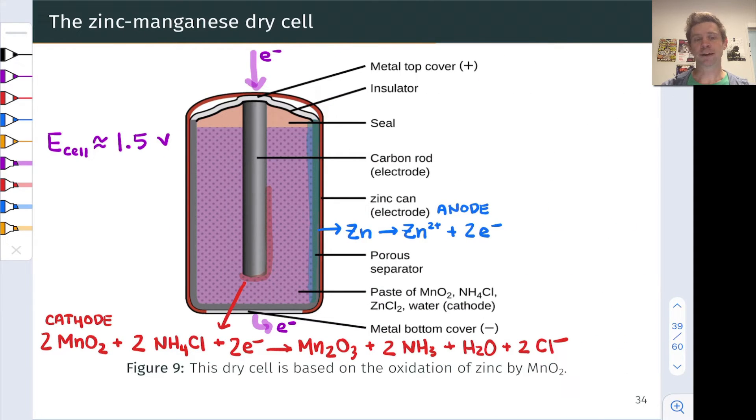More typically nowadays we make use of more carefully engineered batteries and one example of that is the zinc manganese dry cell. It's called a dry cell because the battery is filled with a relatively dry paste, there is some water in here, that contains manganese 4 oxide, ammonium chloride, zinc chloride, and water. And this is the cathode.